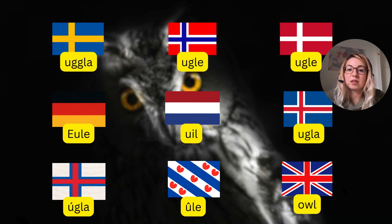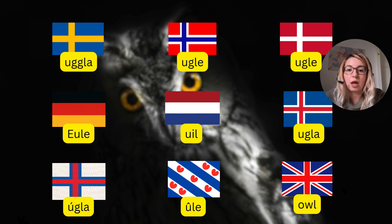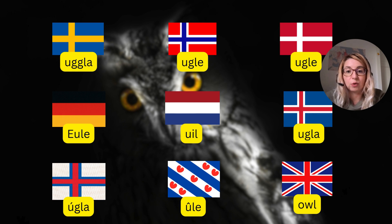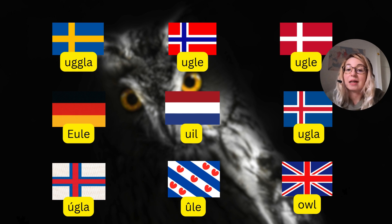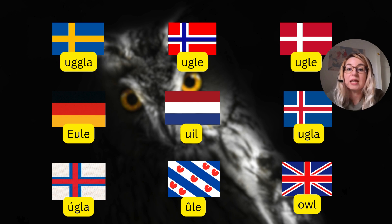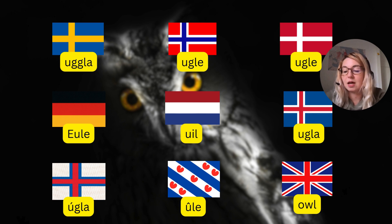Owl is among the easier terms on this list. 'Uggla' in Swedish and Norwegian, 'ugle' in Danish, 'uil' in Dutch, 'Eule' in German, 'ugla' in Icelandic. The reconstructed Proto-Germanic form would have been something like 'uwilō', and it is most definitely — or at least with the highest likelihood — an onomatopoetic word, meaning it is formed after the particular sounds the animal utters.